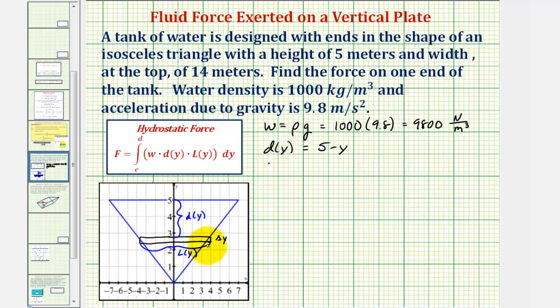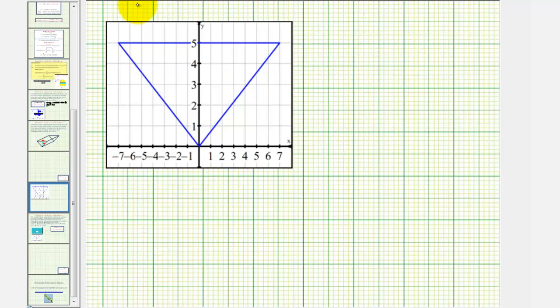Now let's find L(y), this length here. To do this, we'll use similar triangles. Notice how we have this large isosceles triangle and this smaller isosceles triangle, where the base of the smaller isosceles triangle would be L(y). Looking at this larger sketch, let's let this width be L(y).